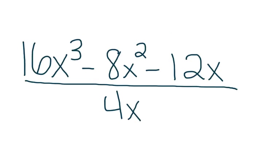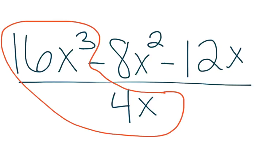The first equation we have is 16x³ - 8x² - 12x divided by 4x. The first part of the equation that we're going to work with is 16x³ divided by 4x.